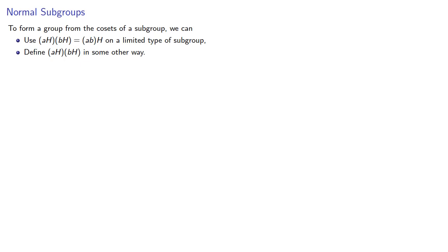So at this point we have a choice. To form a group from the cosets of a subgroup, we can either use our coset multiplication AH, BH equals ABH on a limited type of subgroup, namely whatever subgroups we need to make sure that it's well defined. Or we can define the product AH, BH in some other way. Now we could do either, but since the definition AH, BH equals ABH seems more natural, it's better to limit the types of subgroups we can use.